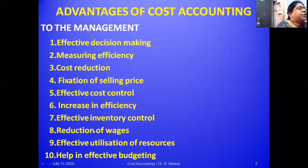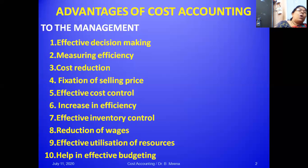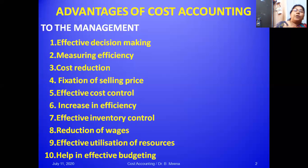The sixth advantage is increase in efficiency. Under an efficient cost accounting system, proper inventory control, labor utilization, and proper analysis of expenditure are possible, resulting in increased efficiency throughout the organization. Next is effective inventory control — an efficient cost accounting system helps in effective inventory control through various techniques such as ABC analysis, stock verification, VED analysis, and levels of stock.